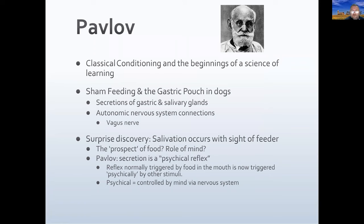Pavlov was not a psychologist — he was a physiologist and surgeon studying digestive physiology in dogs, wanting to understand the neuroscience of the gut, including the vagus nerve and digestive regulation. He didn't want to be associated with psychology, which he considered highly unscientific in that era — a historical irony. He was studying salivation in the mouth and gastric secretions in the stomach. Food in the mouth triggers saliva production — a simple stimulus-response — but he also wanted to know what triggers gastric secretions.